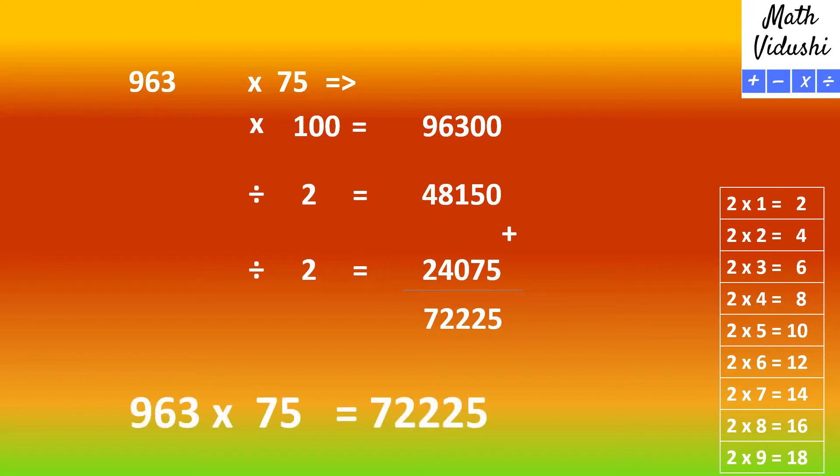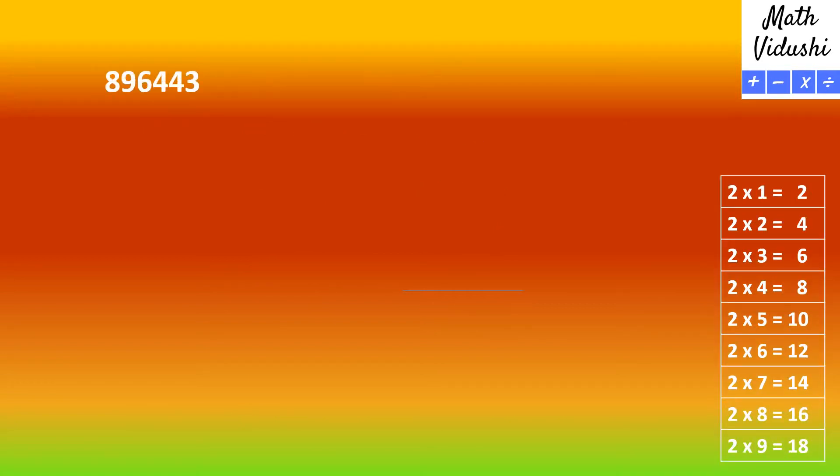So the product of 963 and 75 is 72,225. I hope you got this trick. Let's try a bigger number.